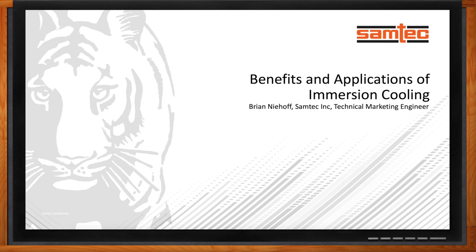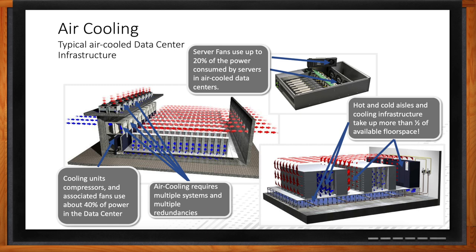Looking at the blade in the top right corner, you can see there are fans inside the box — their main purpose is to blow cold air across the components and keep everything within an operating temperature. However, those server fans actually consume about 20 percent of the power in a data center. And if you look at the picture on the left-hand side, the arrows are pointing to the HVAC systems on the roof, which consume about 40 percent of the power in a data center. Right there you're looking at a significant amount of power taken up without any compute function at all.